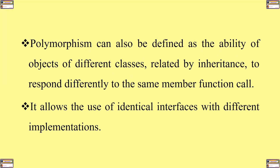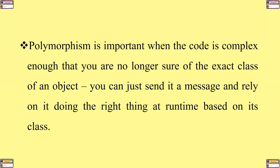It allows the use of identical interfaces with different implementations. Polymorphism is important when the code is complex enough that you are no longer sure of the exact class of an object, and therefore you can just send a message and rely on it doing the right thing at runtime based on its class.